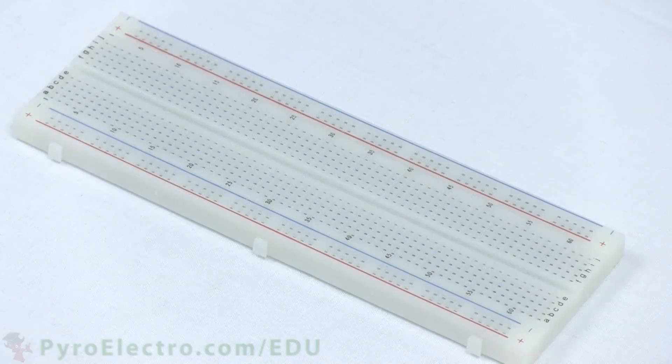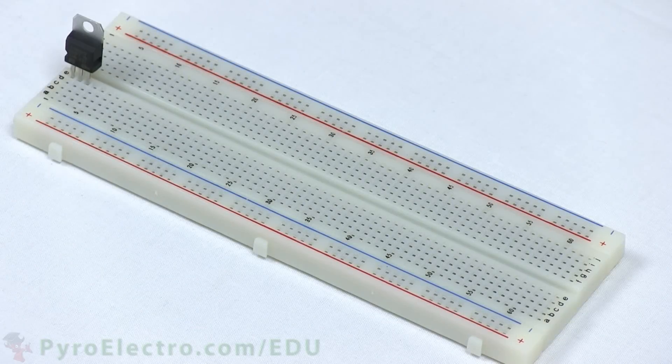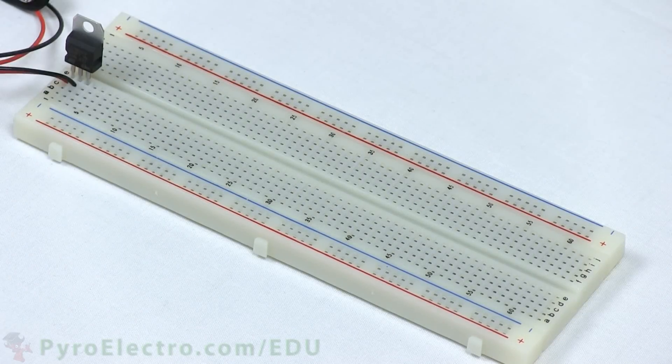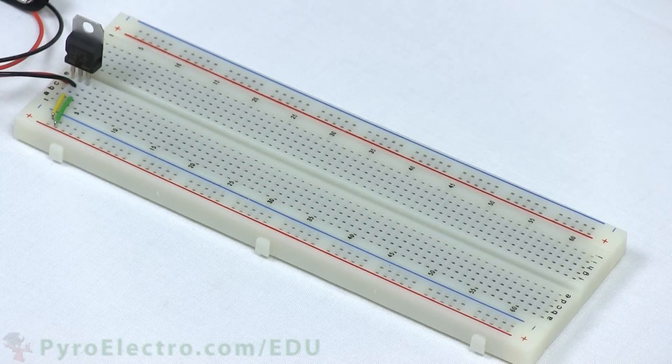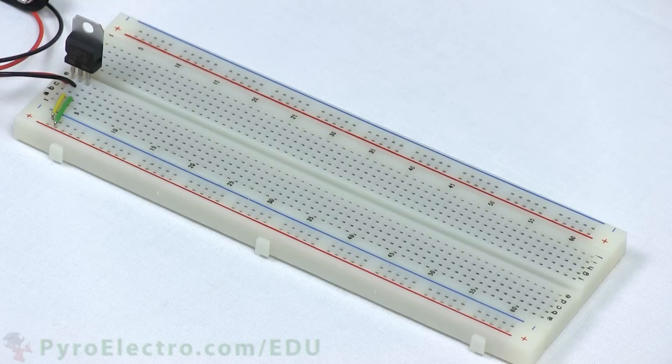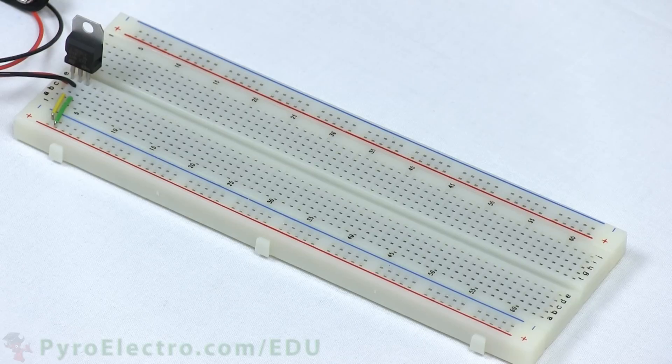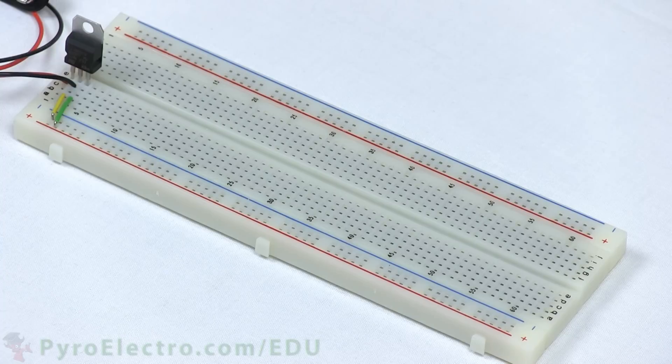To build the circuit, first we'll assemble the power supply. The 7805 goes into the breadboard, and we connect the 9-volt battery connector's red wire to pin 1 and the black wire to pin 2. Next, we connect a yellow wire from the 7805's pin 2 to the ground bus of the breadboard, and a green wire connects from the 7805's pin 3 to the power bus of the breadboard.